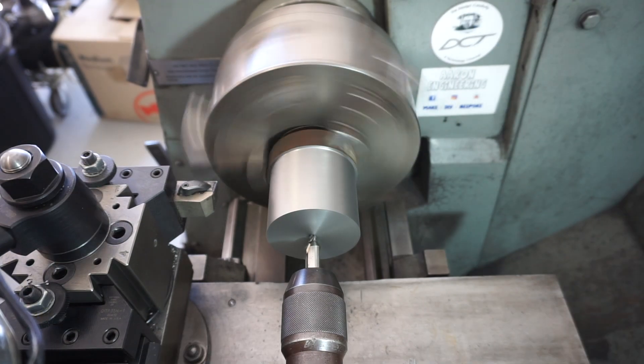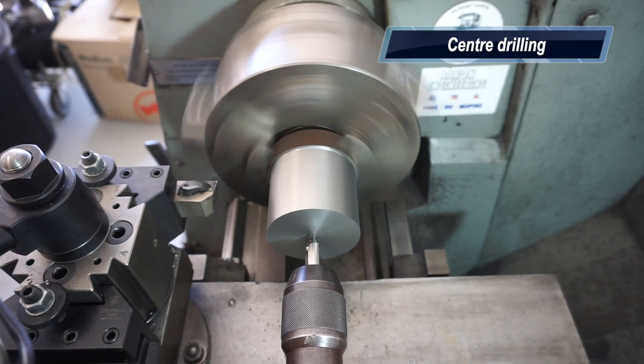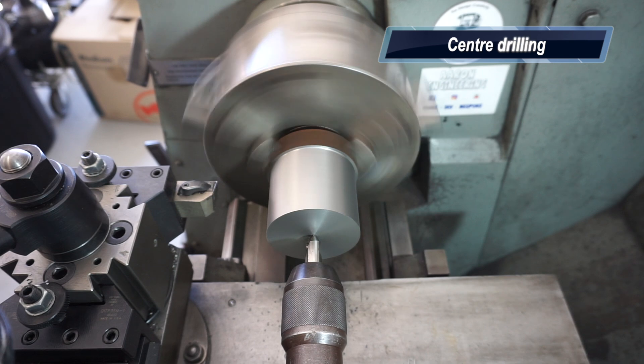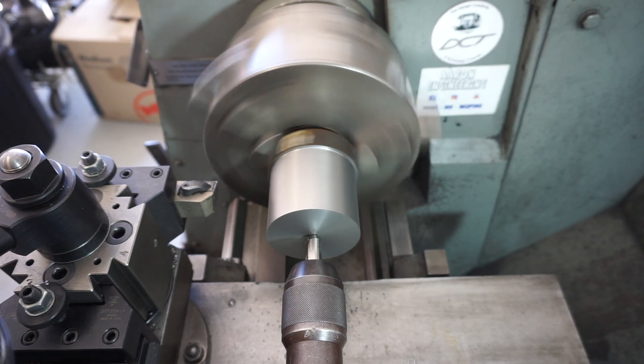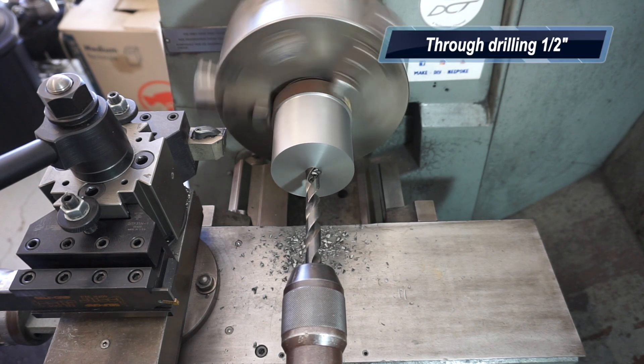Now here we go, we're coming up the backside with the center drill, with the Sutton center drill. The whole idea of this operation is to prepare the slug so I can flip it for operation 2. This is just roughing it out.